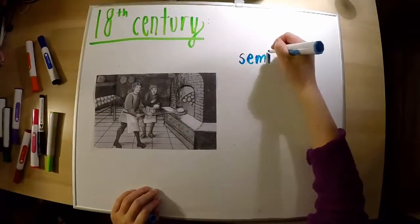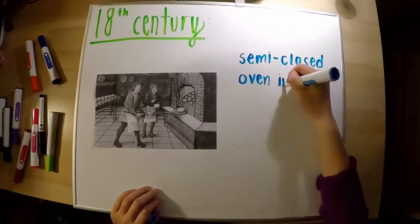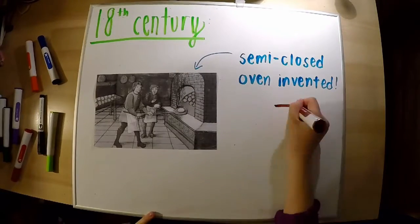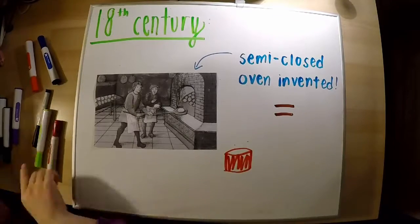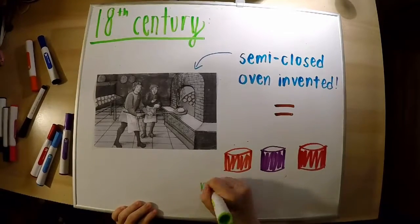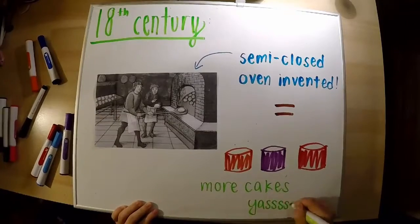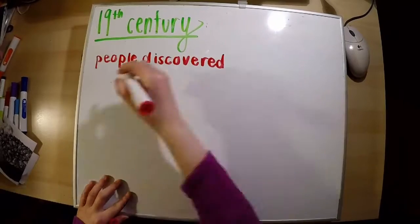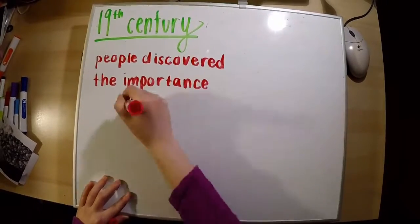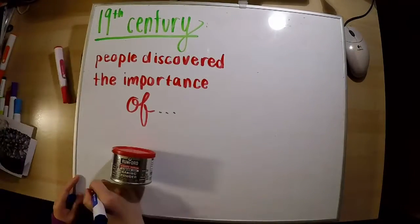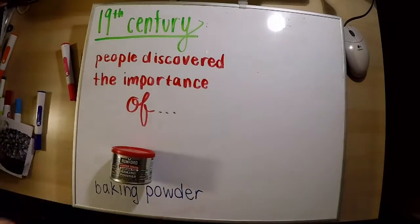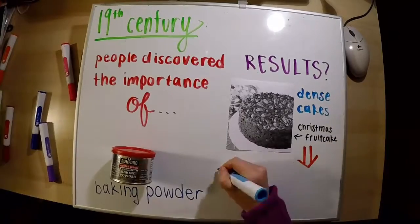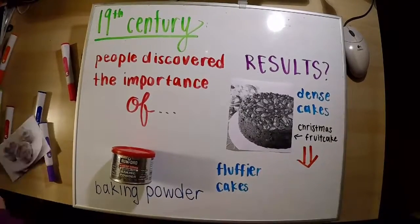In the 18th century, the semi-closed oven was invented, and that gave cake making a surge in popularity — kind of open, kind of closed, but more cakes, so yay! Lastly, in the 19th century, people discovered the importance of baking powder. Nowadays we have baking powder in so many recipes because it resulted in a transition from dense cakes to fluffier cakes.